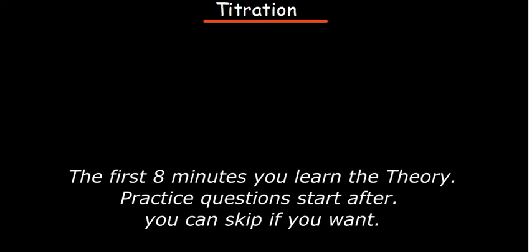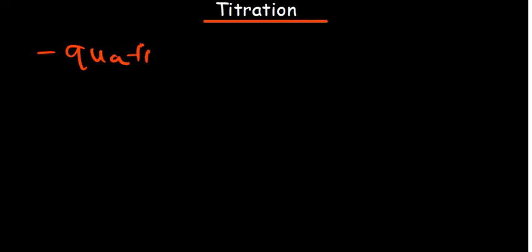In this video we are going to talk about titration. We can basically define titration as the slow addition of a solution of known concentration, which we call the titrant, to another solution of a known volume but unknown concentration. This is also defined as a quantitative analysis where we add a titrant of known concentration to the analyte of a known volume but unknown concentration, so we are able to determine the concentration of the analyte.